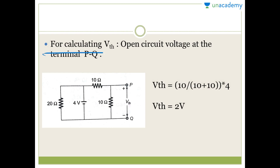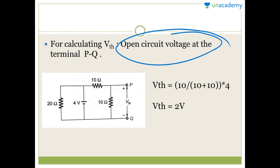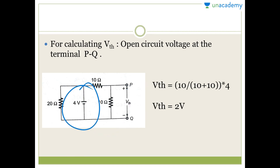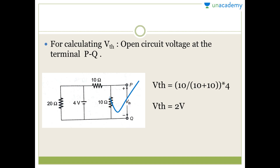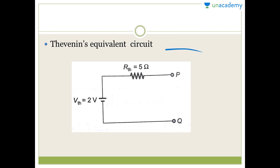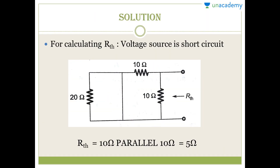For calculating VTH, we have open circuited terminal P and Q. Now applying the voltage division rule: the 4 volt source voltage is divided across the two 10 ohm resistances. Voltage across the 10 ohm equals 10 divided by (10 + 10) multiplied by 4 volts, which gives 2 volts. So VTH equals 2 volts and RTH equals 5 ohm.